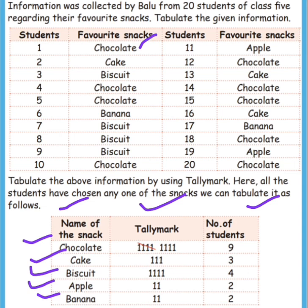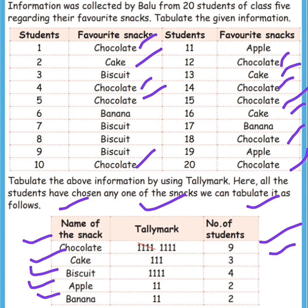If you like chocolate: 1, 2, 3, 4, 5, 6, 7, 8, 9. So nine students like chocolate. Next cake: 1, 2, 3. Three members like cake. Biscuit: 1, 2, 3, 4. So four students like biscuit. Next apple: 1, 2 students. Next banana: 1, 2 students.